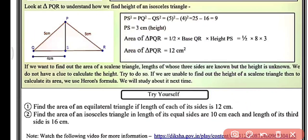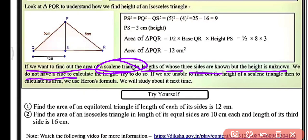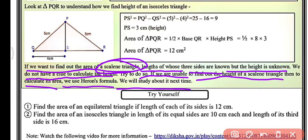Now, if we want to find the area of a scalene triangle — a triangle in which all three sides are of different measure — the three sides are known but the height is unknown. Since we can't calculate the height, we use Heron's formula to calculate the area. We will study Heron's formula in the next video.